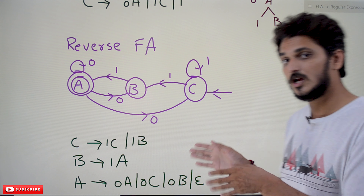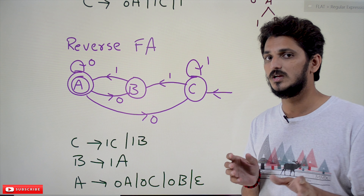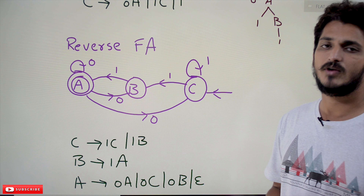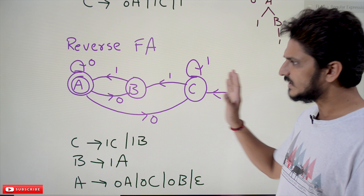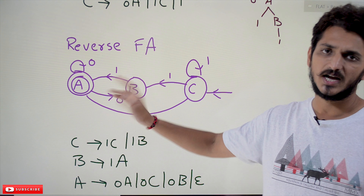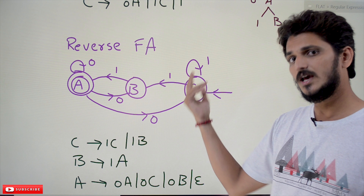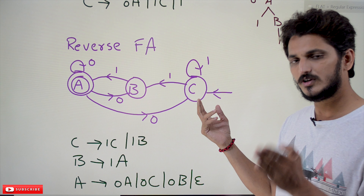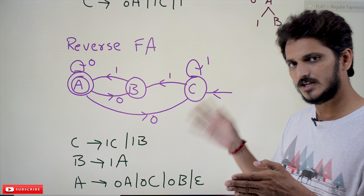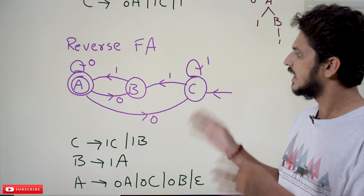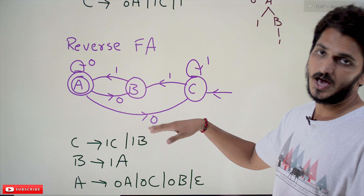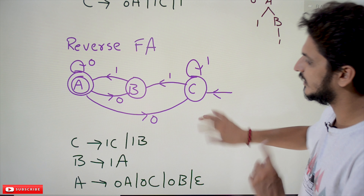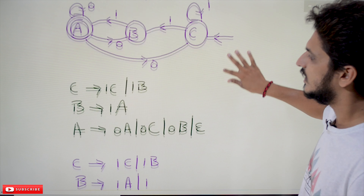Coming to the left linear grammar: to convert the given finite automata into left linear grammar, reverse the finite automata. Reversing means the initial state becomes the final state, the final state becomes the initial state, and all arrow marks are reversed. This is our reversed finite automata.